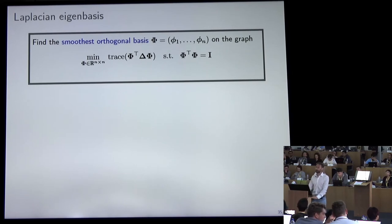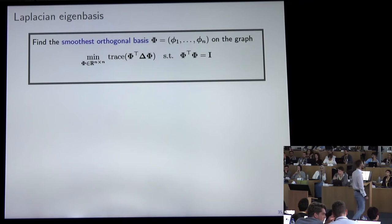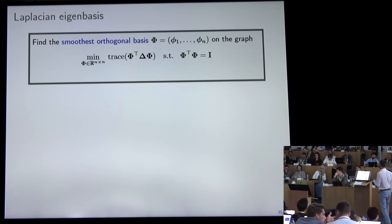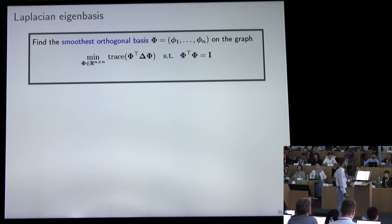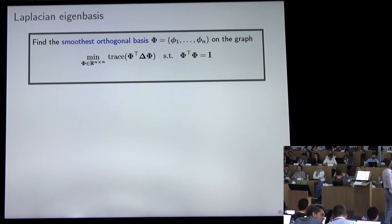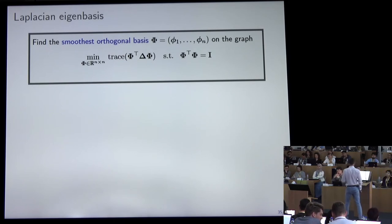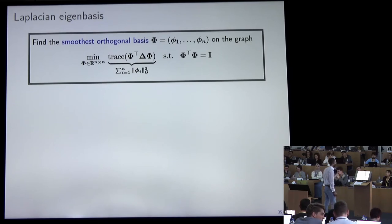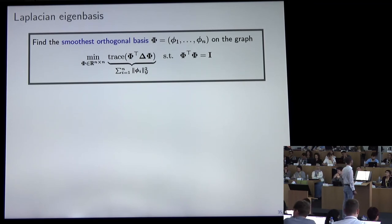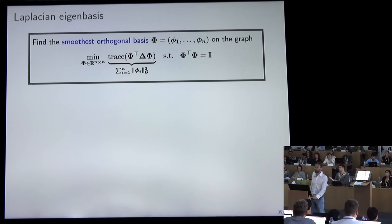We can use the Laplacian to define what is called the Dirichlet energy, which measures the smoothness of a signal on the graph — basically how much you differ from your neighbors. The quadratic form defined by the Laplacian tells me whether I'm very different from my neighbors or not. If the signal is constant, Dirichlet energy is zero; if it changes rapidly along edges, the Dirichlet energy is large. We can look for an orthogonal basis that is smoothest in the sense of this Dirichlet energy.